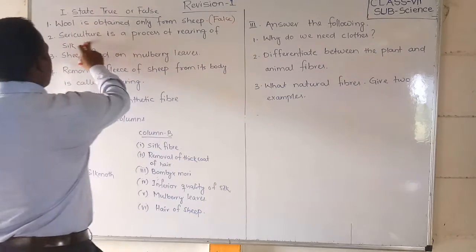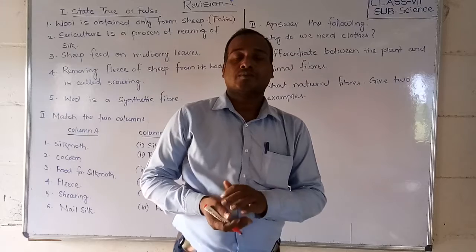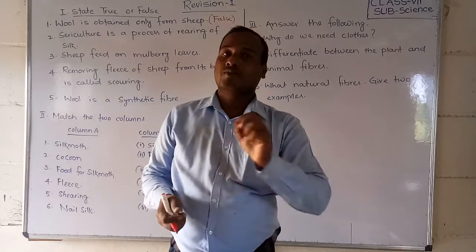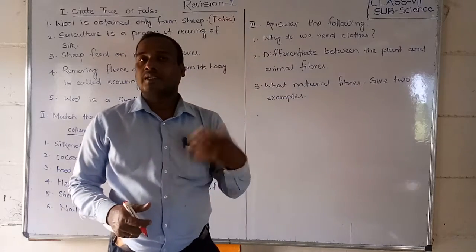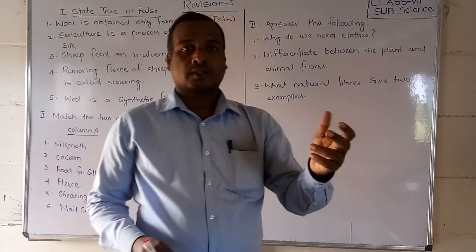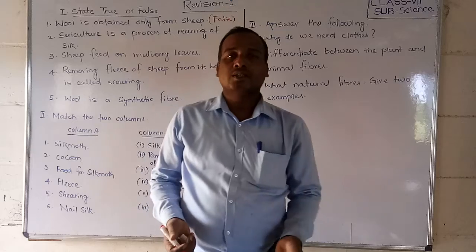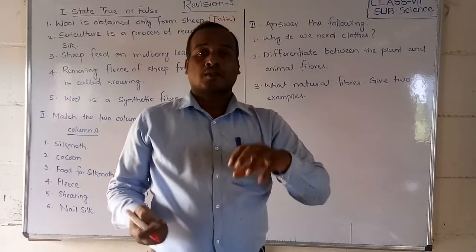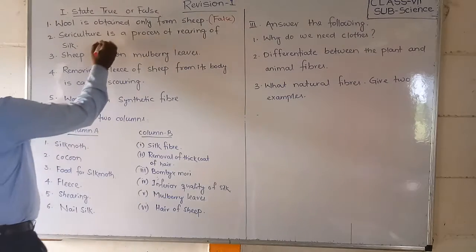Next question: sericulture is a process of rearing of silk. Yes, we are getting silk by the process of sericulture — that cultivation is called sericulture. We get silk from the silk moth. Just like we call farming agriculture, and growing fruits horticulture, the process of getting silk from the silk moth is called sericulture. So this is a true statement — we can write true.